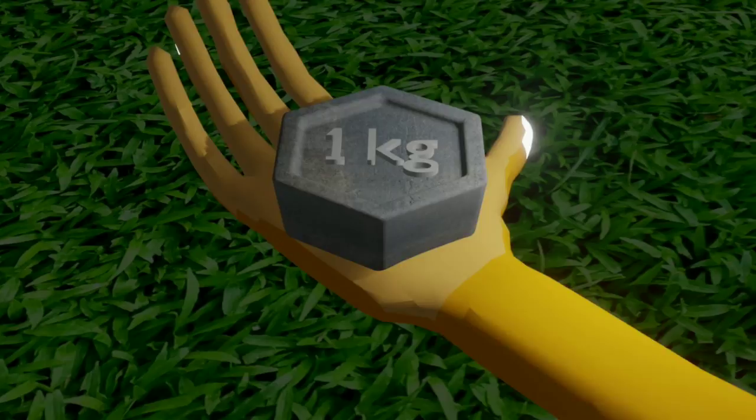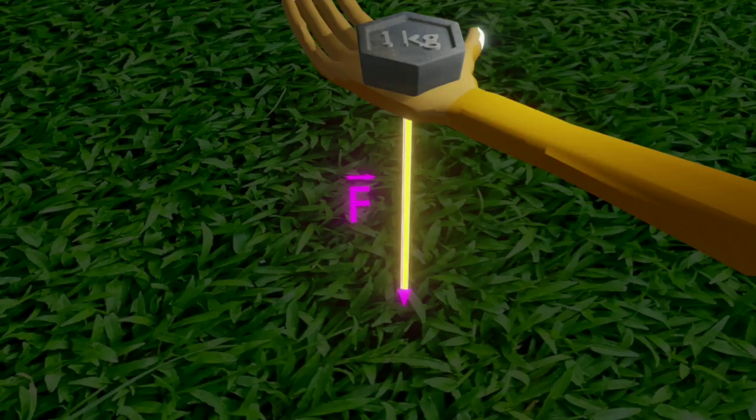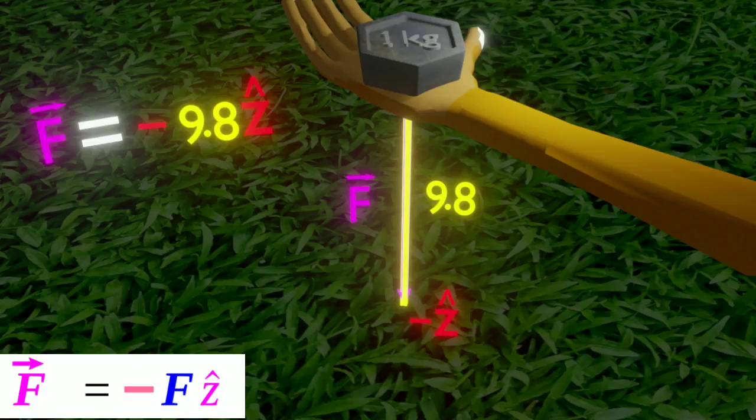For example, let the gravitational force acting on a one kilogram object be F. This vector F has two parts. First one is its value or magnitude, which is about 9.8 newton. And the second one is its direction, which is downwards, or towards minus cap Z direction.